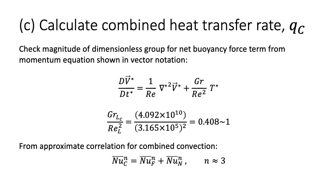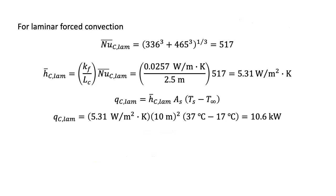We calculate the Nusselt number for combined convection using the appropriate correlation. For a forced laminar flow boundary layer combined with natural convection, we get a Nusselt number of 517, a convection coefficient of 5.31 watts per meter squared kelvin, and a heat transfer rate of 10.6 kilowatts. Note that the correlation does not specify which length scale to use for the Nusselt number definition when forced and natural convection use different values. Since natural convection magnitude was higher for this problem, the characteristic length for natural convection was used, resulting in reasonable values.